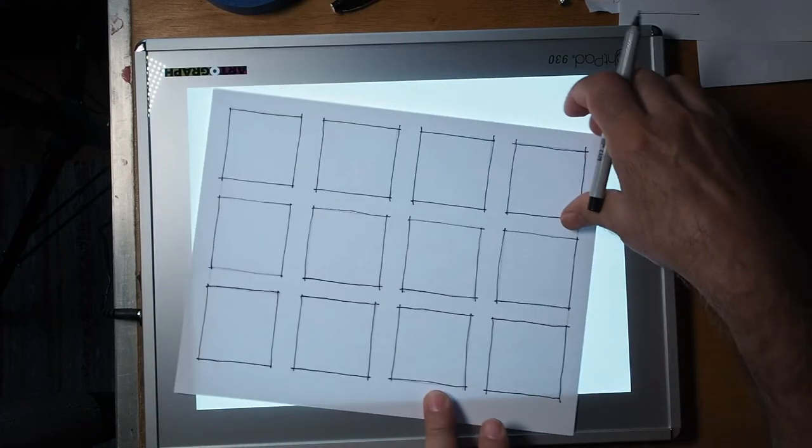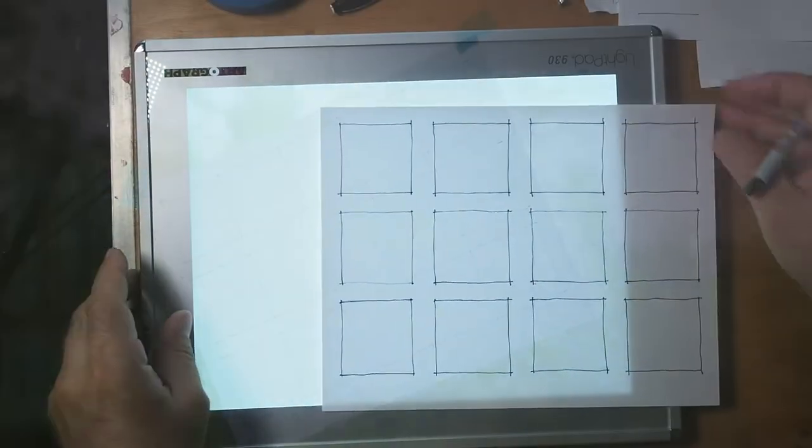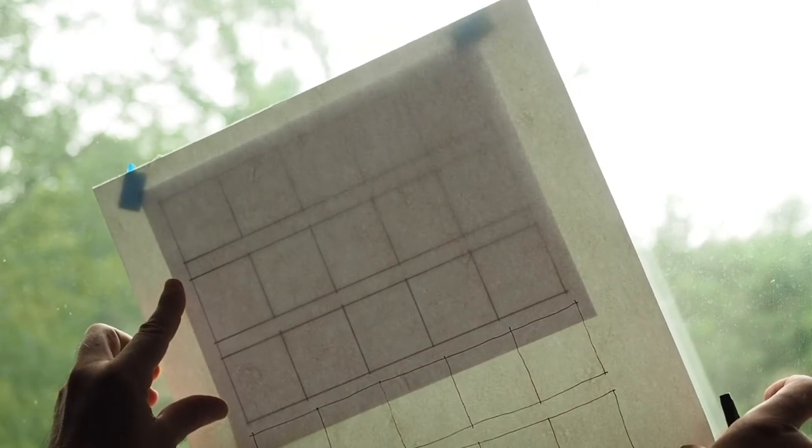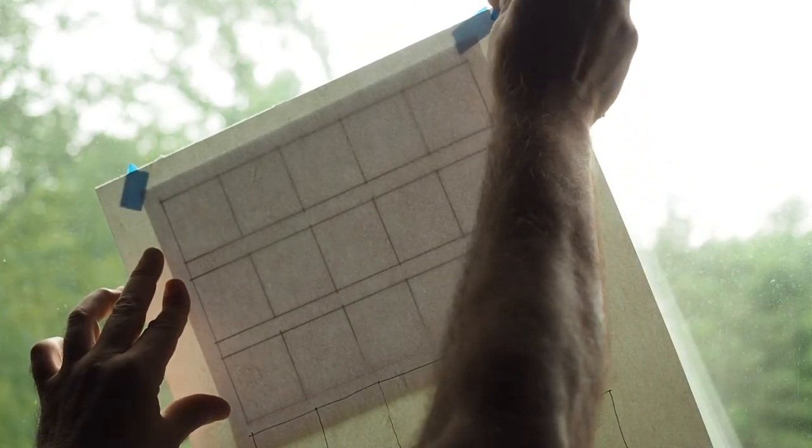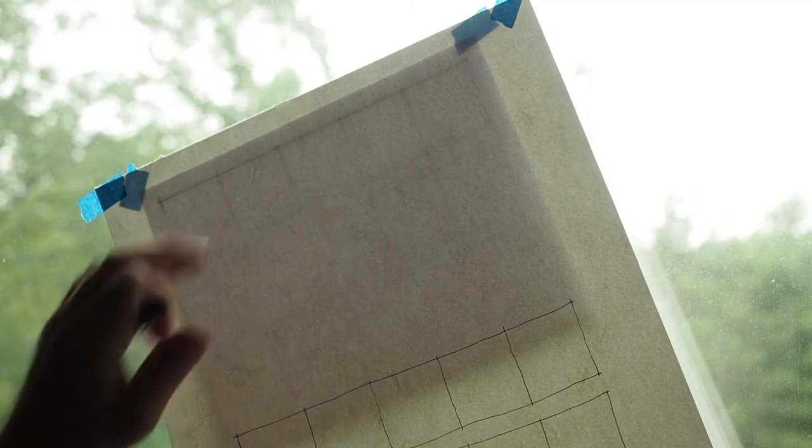You could just print off the PDF pages, but the way I'm doing this, you could get the grid onto your drawing pad paper easily. Here, I'm using a window instead of my little lightbox. This works just as well.